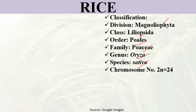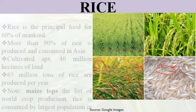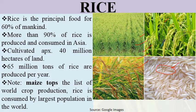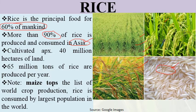The diploid chromosome number is 24, as already discussed. Rice is the principal food of 60 percent of mankind, and more than 90 percent of rice is produced and consumed in Asia. So 60 percent of the world's population has rice as their staple food, and more than 90 percent of its production and consumption occurs in Asia.